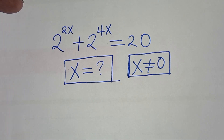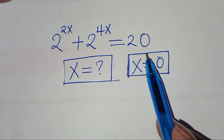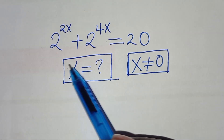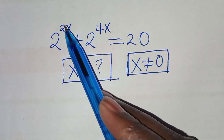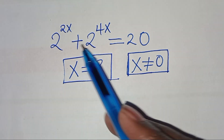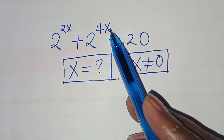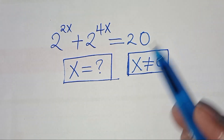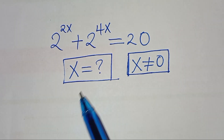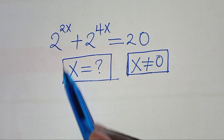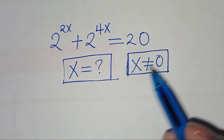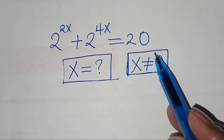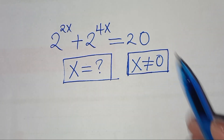Hello everyone, you are welcome to solve this nice exponential problem which is 2 to the power of 2x plus 2 to the power of 4x, this is equal to 20. What is the value of x, given that x is not equal to 0?